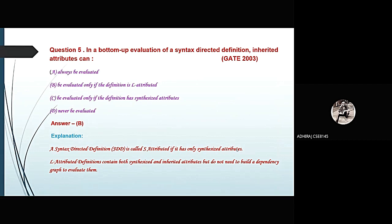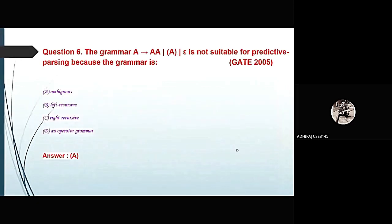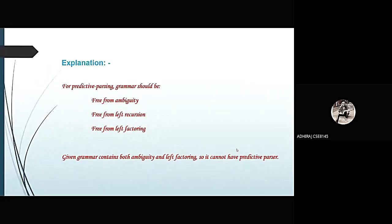The next question: the given grammar is not suitable for predictive parsing because the grammar is: Option A — ambiguous; Option B — left recursive; Option C — right recursive; Option D — an operator grammar. The correct option is A — ambiguous. This question came from GATE 2005. For predictive parsing, grammar should be free of ambiguity, free from left recursion, and free from left factoring. The given grammar contains both ambiguity and left factoring, so it cannot have a predictive parser.